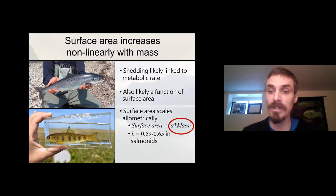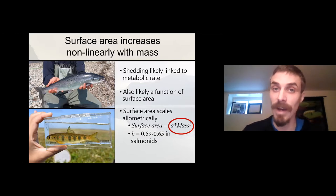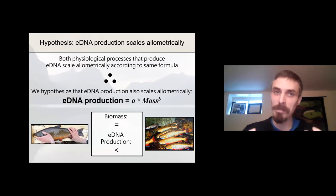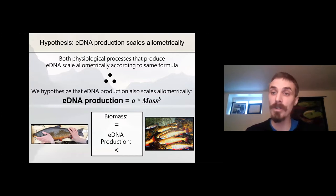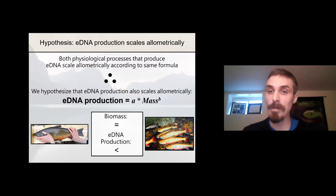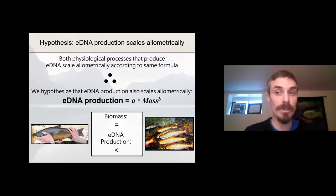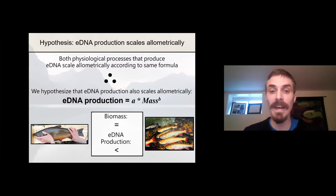Not only that, but the value of B actually tends to be pretty similar to what's observed for excretory processes. The value of B in salmonids, for example, is 0.59 to 0.65. So with physiological processes that produce eDNA scaling allometrically according to the same formula, we developed a hypothesis that eDNA production is also going to scale allometrically — that we can express eDNA production as a function of individual mass raised to the power of a scaling coefficient B. In functional terms, we're predicting that a single large individual is going to produce less eDNA than the equivalent biomass of smaller conspecifics.